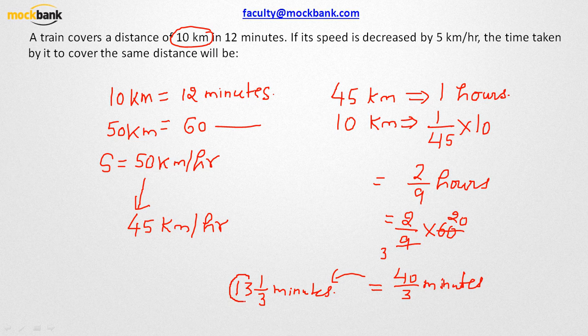Now you understand, this is 13 minutes complete, and 1 over 3 of a minute—this will be nothing but 20 seconds. Because 1 minute equals 60 seconds. So 1 over 3 minutes would give you 20 seconds. So the total time taken to cover the same distance would be 13 minutes 20 seconds.